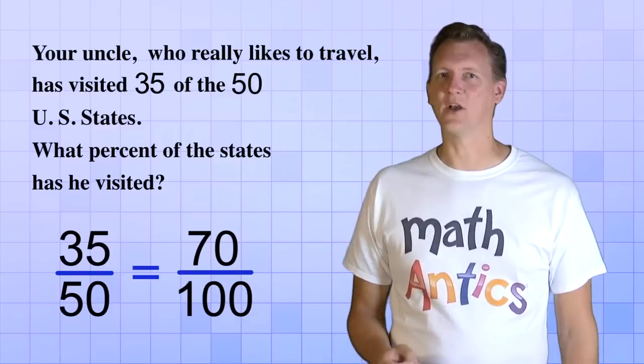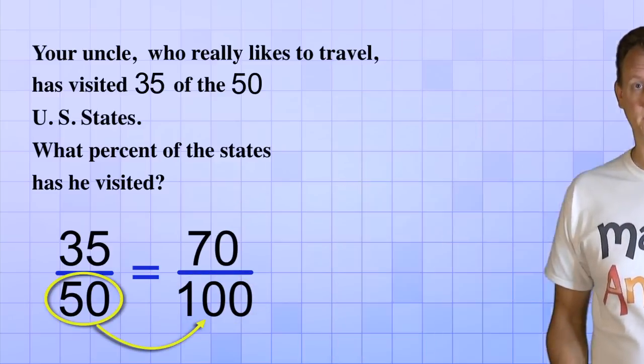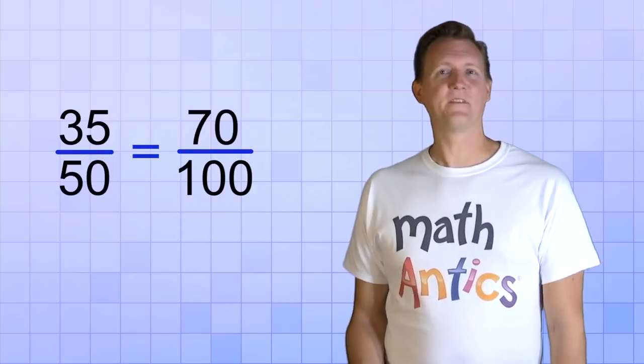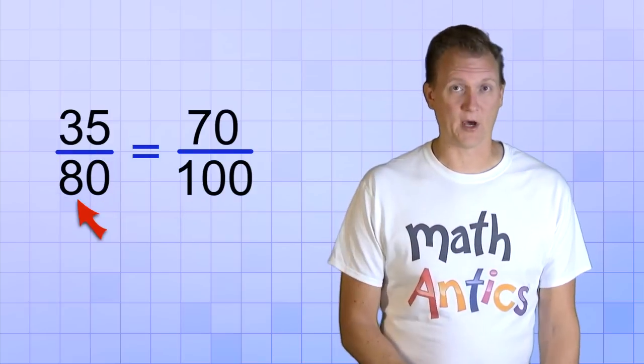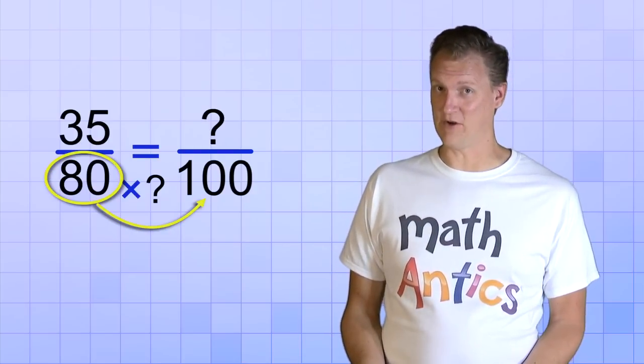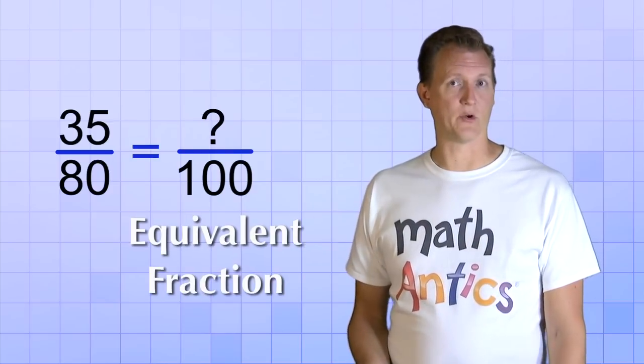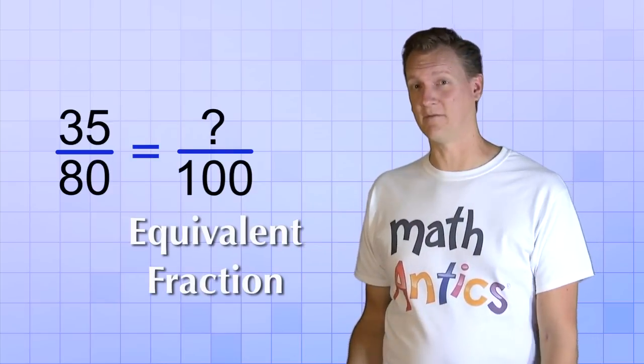The trouble is, that way is only easy if it's easy to change the bottom number into 100. For example, what if instead of 50, you had 80 as the bottom number? What could you multiply 80 by to get 100? Well, that's not as easy to figure out. So even though finding an equivalent fraction is sometimes a good way to convert a fraction into a percent form, I'm going to show you another way that I think is even better.